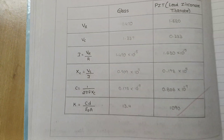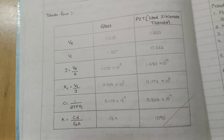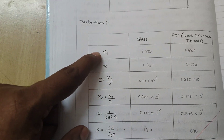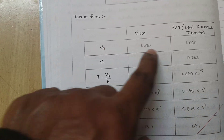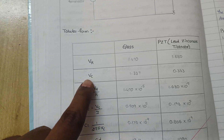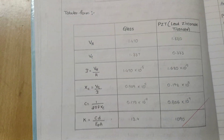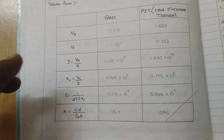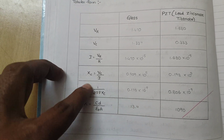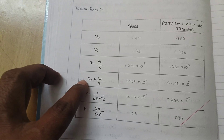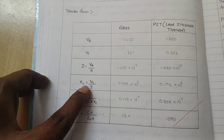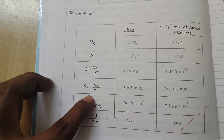Now we have to do the calculations. This is the circuit diagram we have already completed, and this is the tabular form for glass and PJT. We have taken readings for VR and VC for both materials. To get the current value, we use Ohm's Law: I = VR / R. Then we find the capacitive reactance: XC = VC / I.